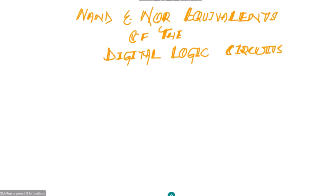Welcome back. Today we are going to discuss NAND and NOR equivalents of the fundamental digital logic gates. The reason it is important to represent them with NAND and NOR gates is because of the easy availability of NAND and NOR gates as universal gates. Therefore, most gates — NOT, AND, OR — are basically made of NAND and NOR gates.